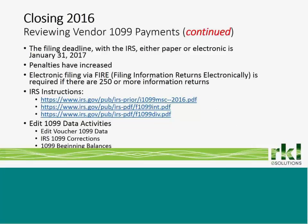The filing deadline for 1099 forms is January 31st, regardless of whether you're filing on paper or electronically. Penalties have increased, so make sure you meet the deadline. You also have the option of electronic filing via FIRE — Filing Information Returns Electronically — which is directly through the IRS and is actually required if you have 250 or more 1099 forms to file. I've listed IRS instructions for the various 1099 forms; the vast majority of our client base runs 1099 miscellaneous, which is the first link.